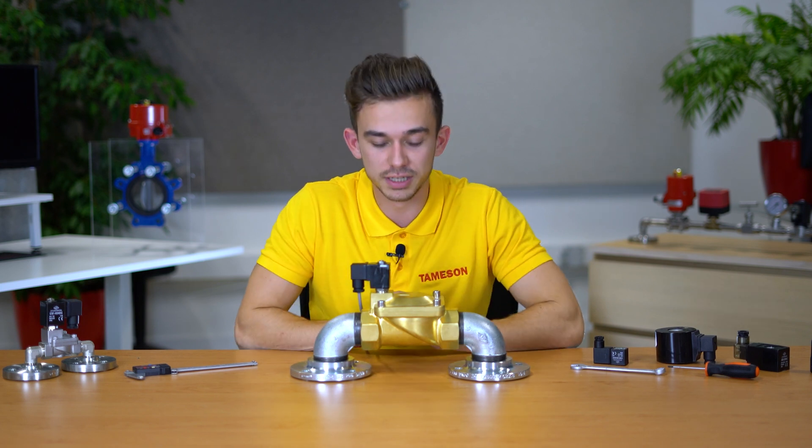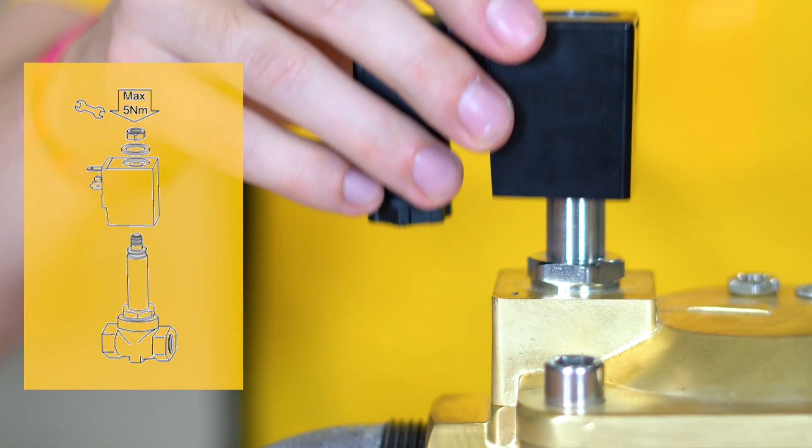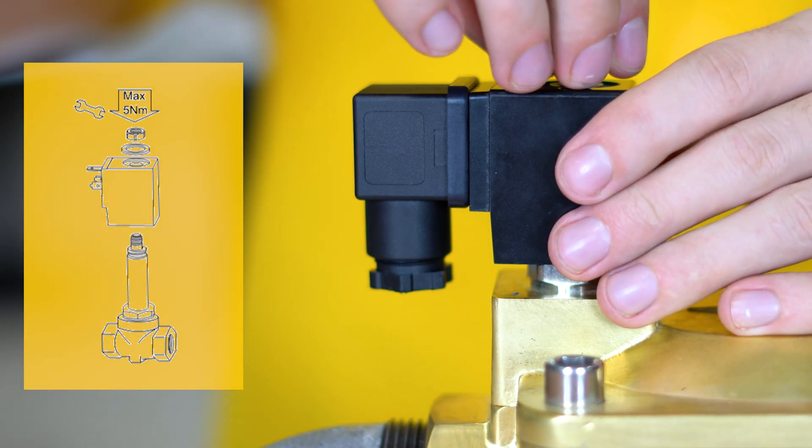Now, let's replace this coil. To install the coil, follow these easy steps. First, place the coil over the valve. Next, place the retaining ring on the end and tighten the nut.